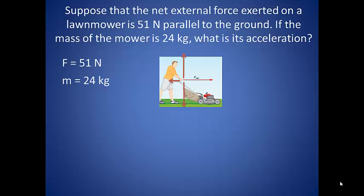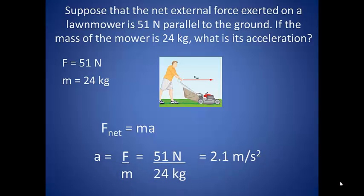So suppose that the net external force exerted on a lawnmower is 51 Newtons parallel to the ground. If the mass of the mower is 24 kilograms, what is its acceleration? So we have a net force of 51 Newtons being applied parallel to the ground in the direction of the motion. This means that gravity is balanced by the upwards normal force, and any friction on the opposite direction is overcome by the applied force. We also know that the mass of the mower is 24 kilograms. A good place to start is with our second law equation, and when we compare to what we know, we like it even more. Rearrange that equation to solve for the acceleration, and plug in our force and mass to give us an acceleration of 2.1 meters per second squared.